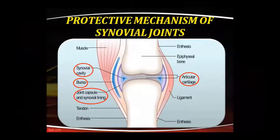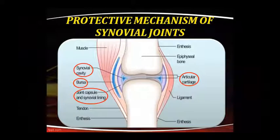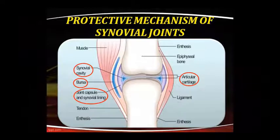Osteoarthritis, which we call OA, is a bone joints disorder. Our synovial joints have a protective mechanism. Each joint is made of an articular surface, and there is a space in which we have synovial lining. This membrane has synovial lining and loose fibro-vascular connective tissues. In this space, there is a fluid which can lubricate the joint space, and this fluid contains hyaluronic acid.